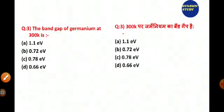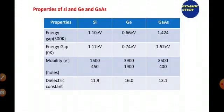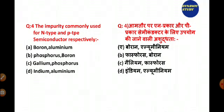The next question: the band gap of germanium at 300 Kelvin. The answer is option D — 0.66 electron volt. Here are some properties listed for silicon, germanium, and gallium arsenide: energy band gap at 300 Kelvin, energy gap at 0 Kelvin, mobility for electrons and holes, and dielectric constant.